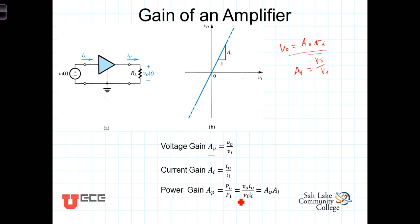And as we can see, the power gain A_p then is just equal to the ratio of V_out over V_in or A_v times the ratio of the output current to the input current A_i.